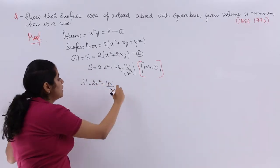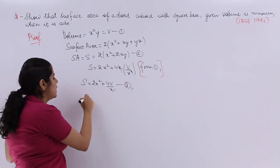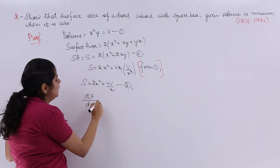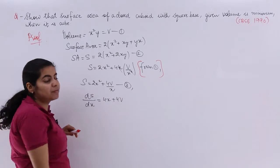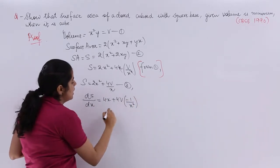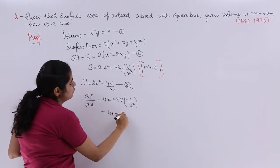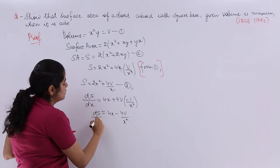Now things cancel, X cancel with X. It is S is equal to 2X square plus 4V upon X. Now what I can do is if this is my equation number 3, I know that I need to differentiate surface area. So finding DS by DX which is equal to 4X plus 4V and 1 upon X differentiation is minus 1 upon X square. It is equal to 4X minus 4V upon X square and that is equal to your DS by DX.